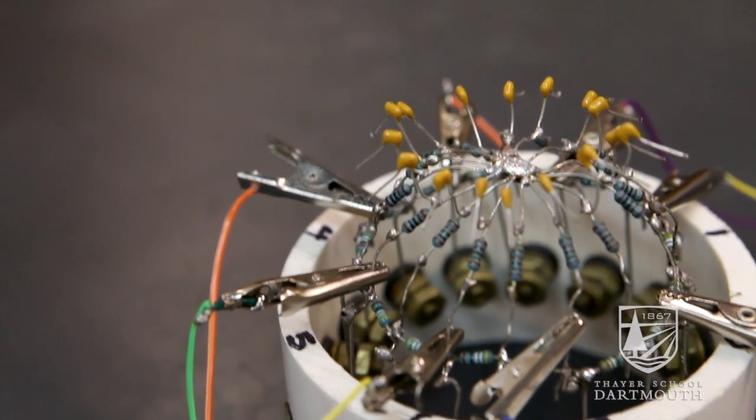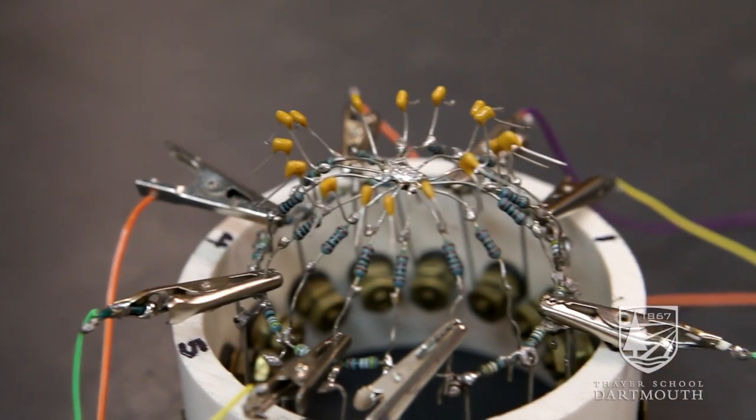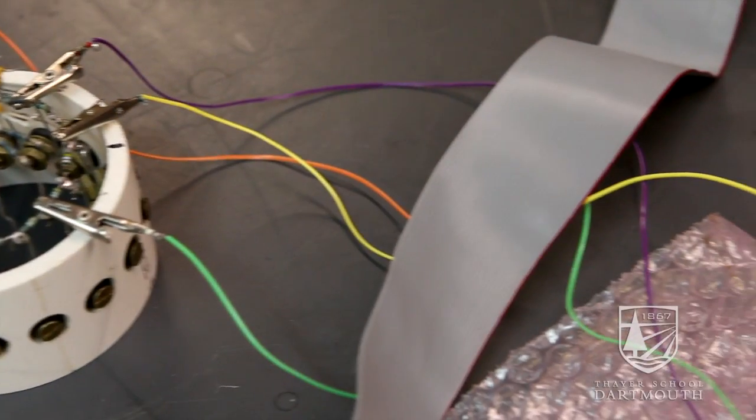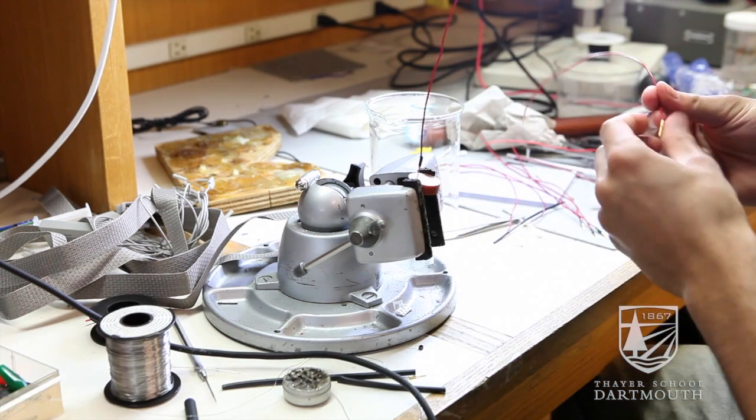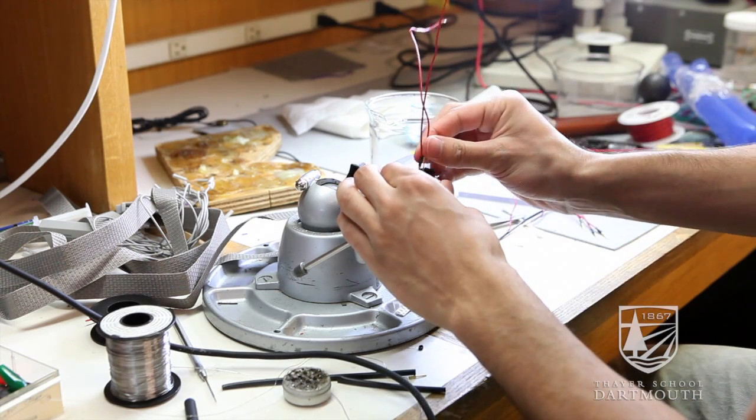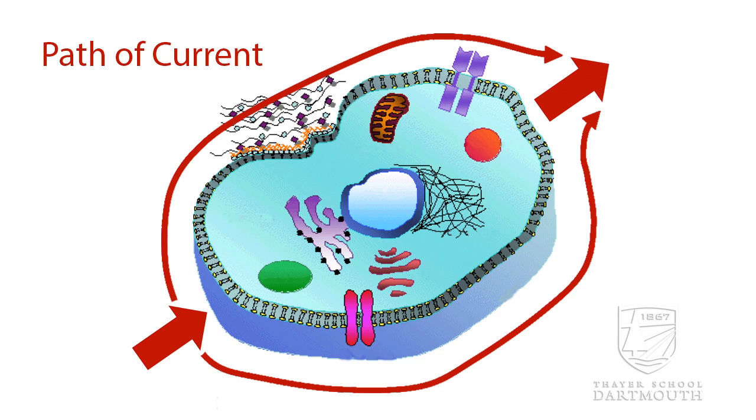The technology that I'm specifically focused on researching involves looking at the electrical properties of tissue. It turns out that the electrical properties, this is basically how current flows through tissue, varies depending on the tissue type.